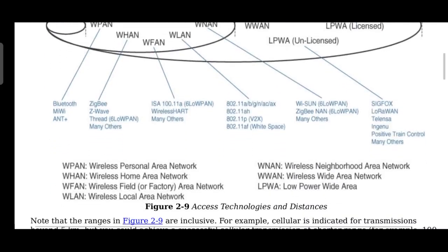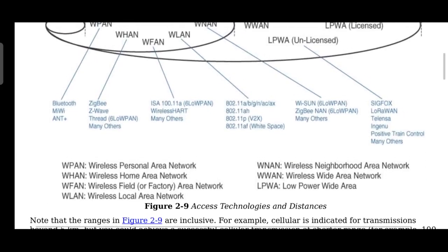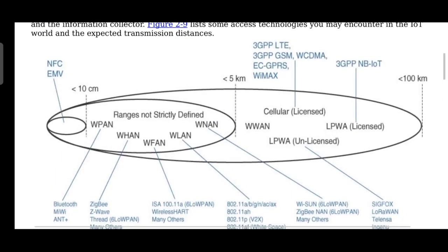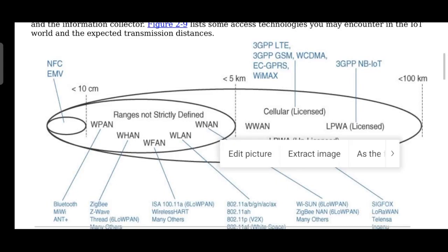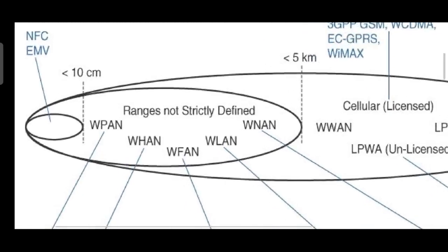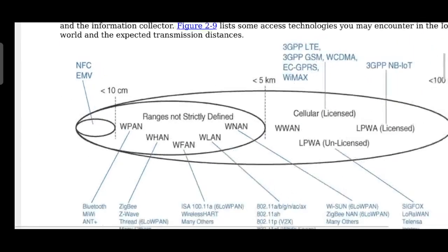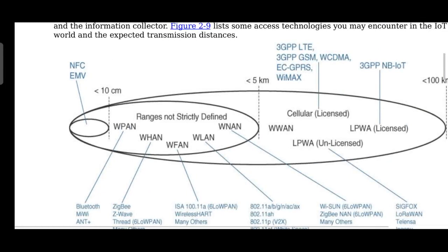Here is the diagram showing access technology and its distance coverage. Near Field Communication (NFC) is shown with a small loop, marked as less than 10 centimeters range. Coverage can be extended up to 5 kilometers with other technologies.